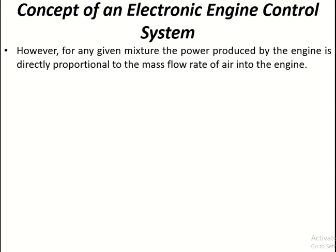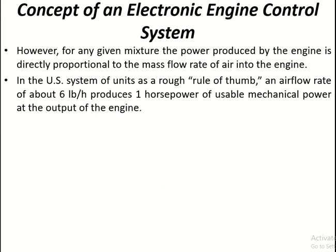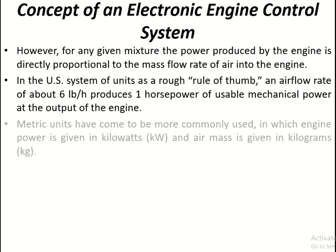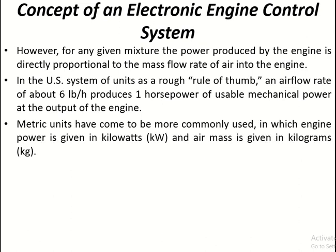For any given mixture, the power produced by the engine is directly proportional to the mass flow rate of air into the engine. As a rough rule of thumb in the US system of units, an air flow rate of around six pounds per hour produces one horsepower of usable mechanical power at the engine output. Metric units are more commonly used, in which engine power is given in kilowatts and air mass is given in kilograms.